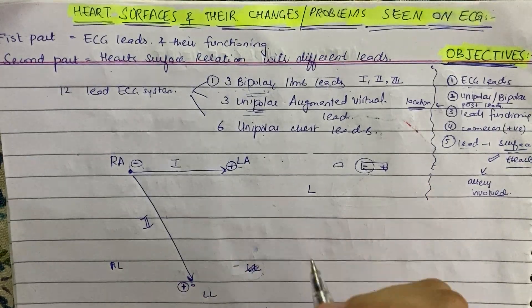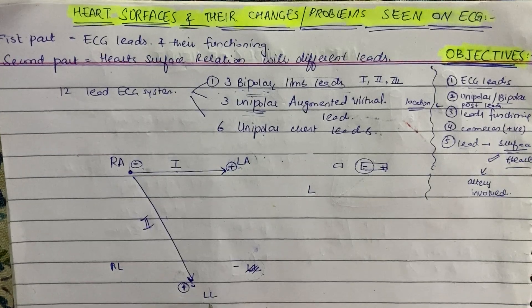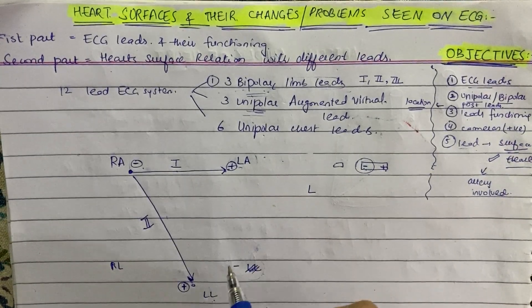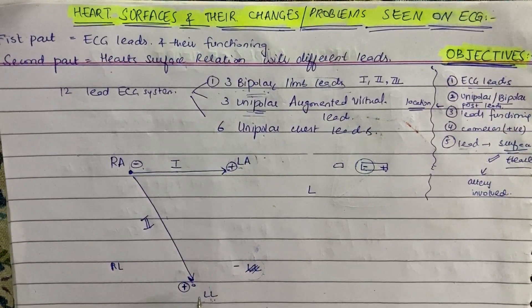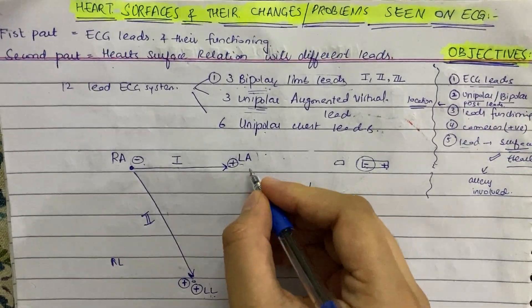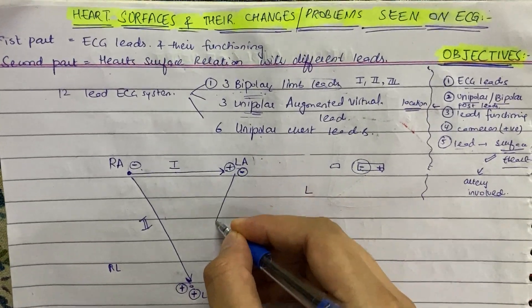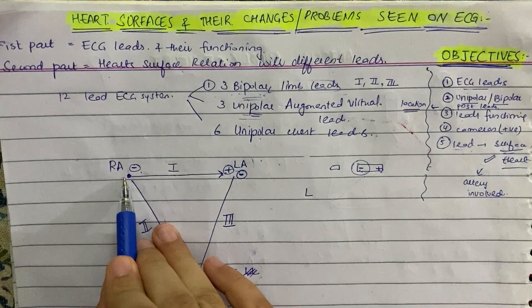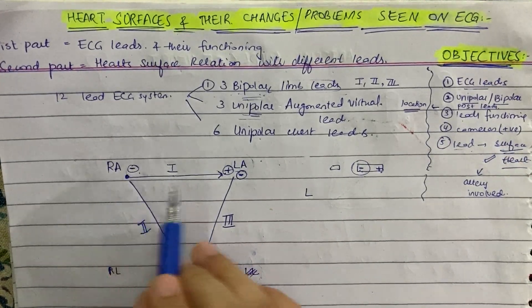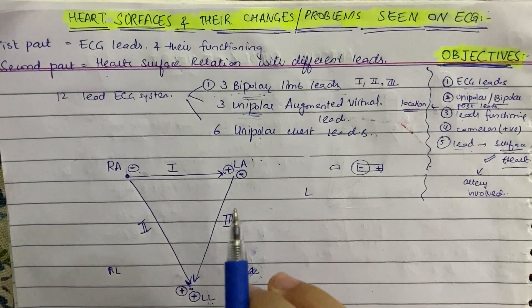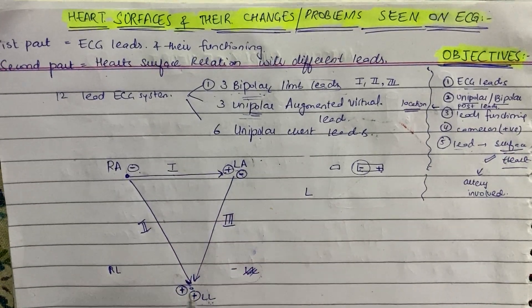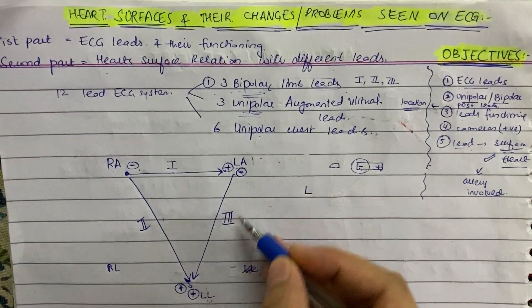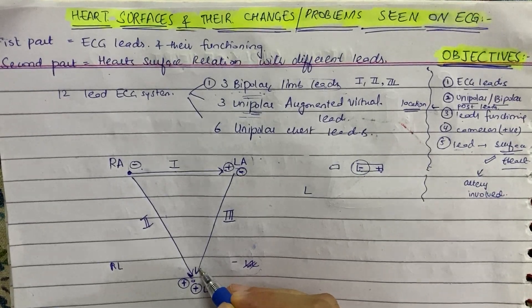The third bipolar lead, Lead 3, connects the left arm with the left leg. Both have L's, but left leg (LL) has two L's compared to left arm (LA), so the left leg is positive and the left arm is negative. The vector moves from left arm to left leg, negative to positive. Quick recall: Lead 1 connects right arm to left arm; Lead 2 connects right arm to left leg; Lead 3 connects left arm to left leg — all directed negative to positive.